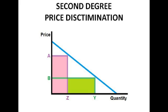So up to quantity Z is sold at price A, and then beyond Z, quantity ZY is sold at price B. If we didn't have price discrimination and sold everything at price B, we'd have much less profit — the firm would be missing out on that rectangle at the top. So it's really important that they capture this extra profit.